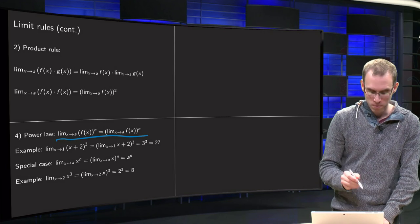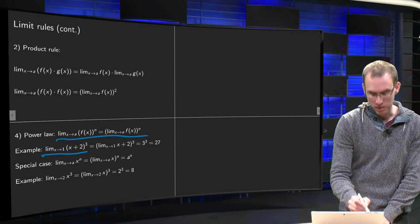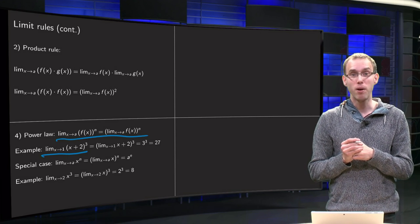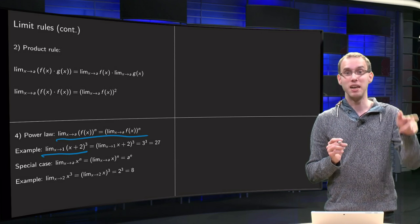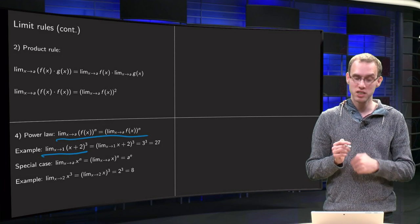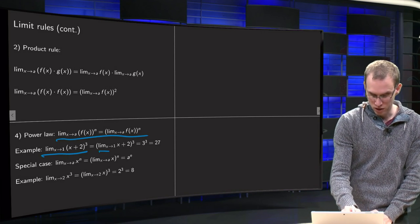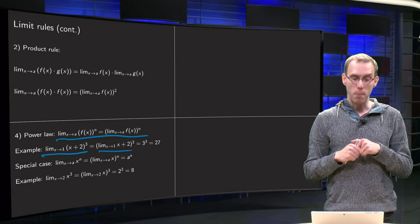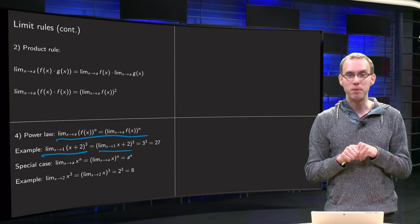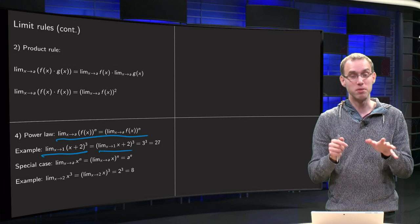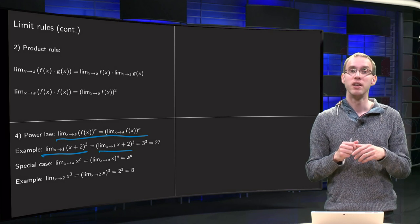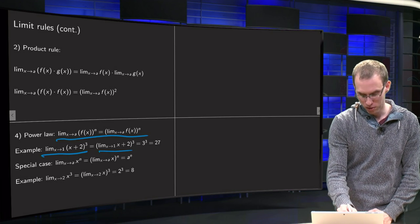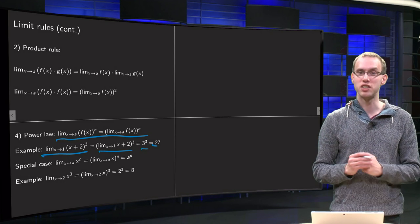How does that work? If we have, for example, the limit of (x+2)^3, we can apply the power law and take the limit inside — if the limit exists. We take the limit as x→1 of (x+2) first, and then raise to the power of 3. The limit of x+2 as x→1 equals 3, and then 3^3 equals 27.